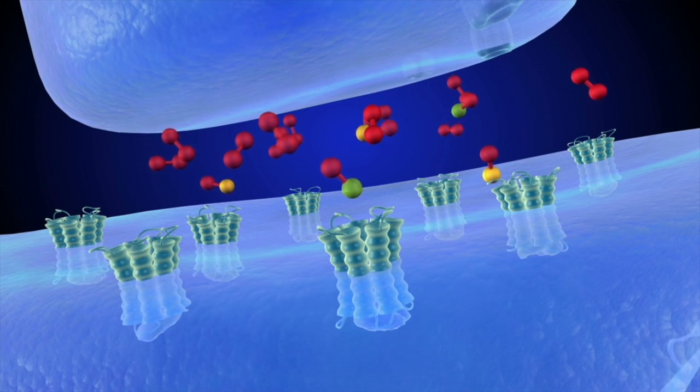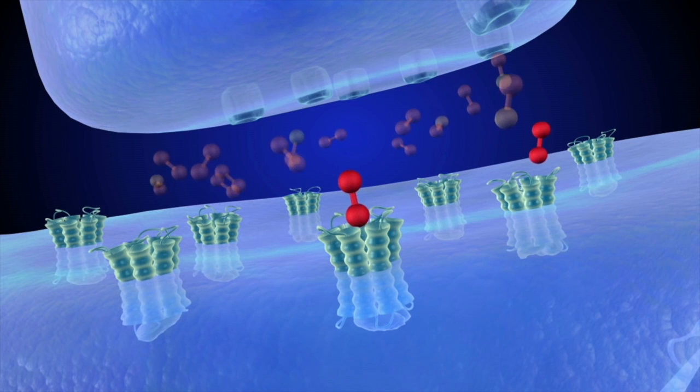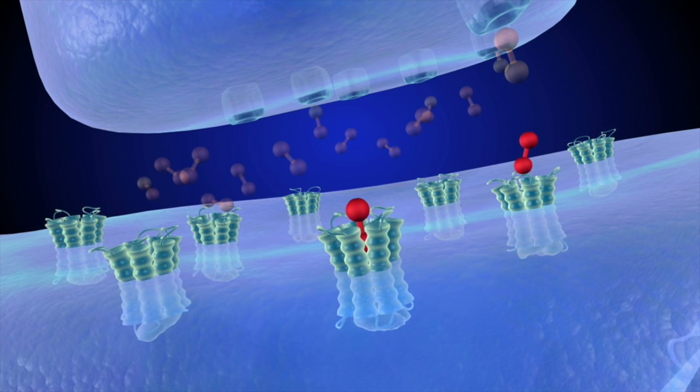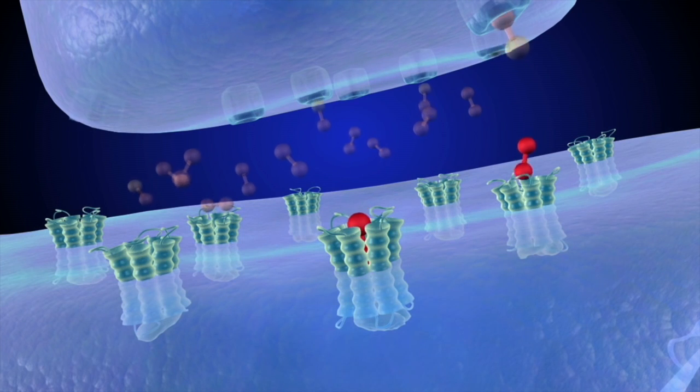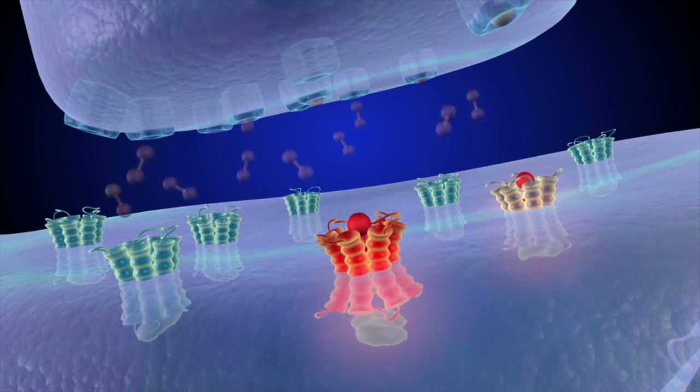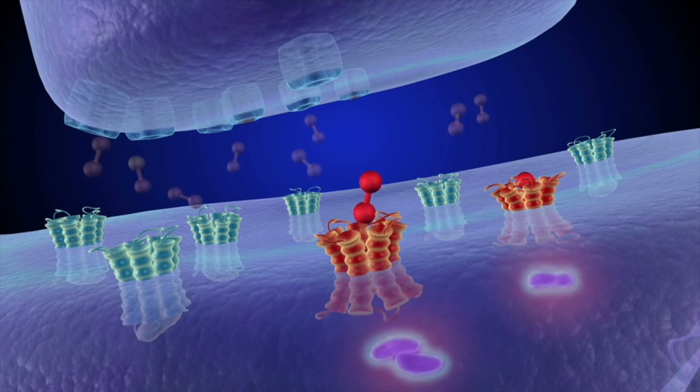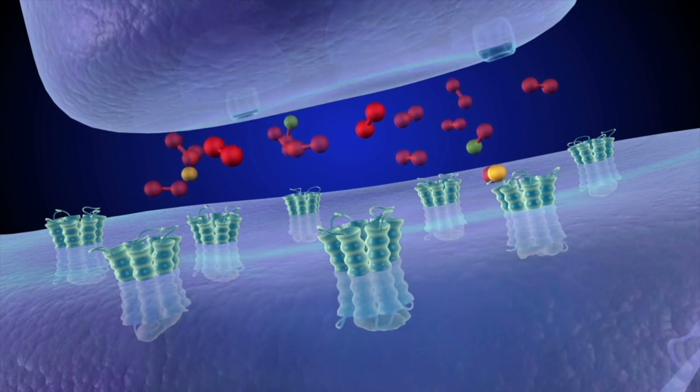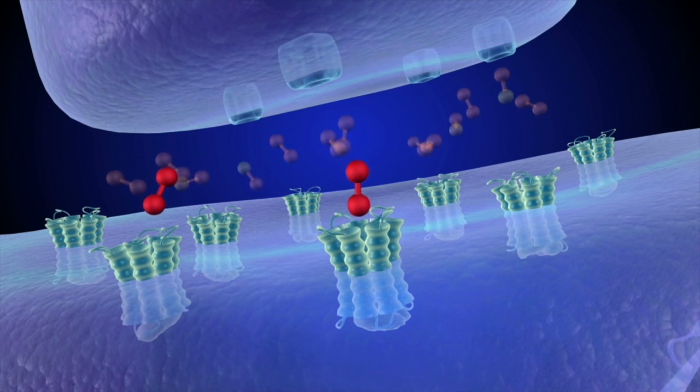The released dopamine molecules travel across the synapse and link up with proteins called dopamine receptors on the surface of the receiving cell. When dopamine binds to the exterior of the dopamine receptor, this causes proteins attached to the interior part of the receptors to carry the signal onward within the cell.